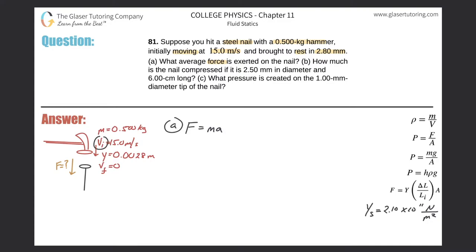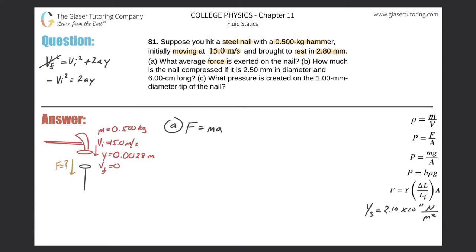We have an initial velocity, a change in distance, and now a final velocity. We want to tie those three variables to acceleration. The formula is: vf² = vi² + 2aΔy. We know the final velocity is zero, so we solve for a. Subtracting vi² to the left-hand side, we get negative vi² equals 2aΔy, and dividing by 2Δy gives us a = −vi² / (2y).